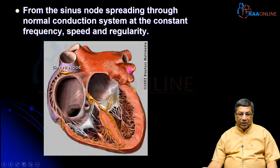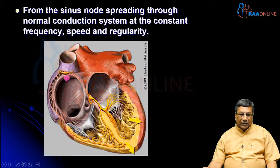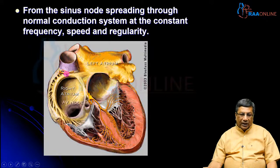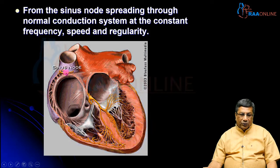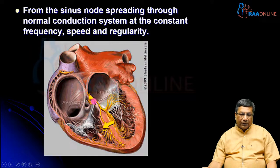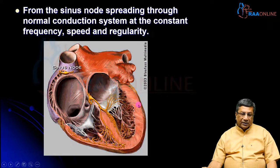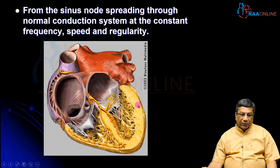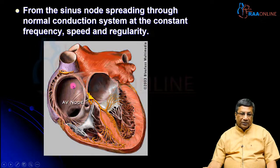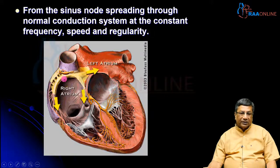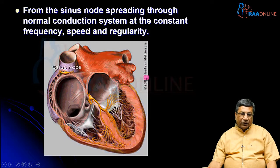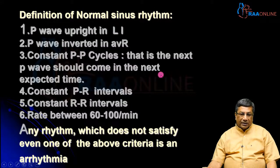Normal sinus rhythm means the electrical impulse to the entire heart is produced by the sinus node, at the right frequency, traveling through the appropriate pathway at the appropriate speed, reaching each structure at the appropriate time, and each structure responding to that current correctly. In other words, the sinus node is controlling the heart through its electrical impulses at the right frequency and via the right pathway.